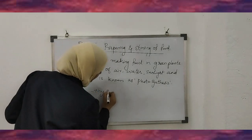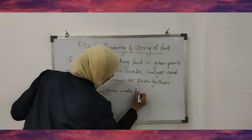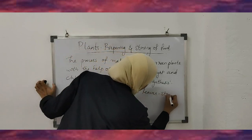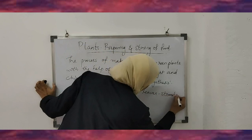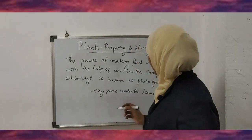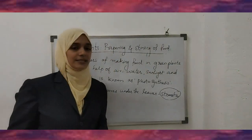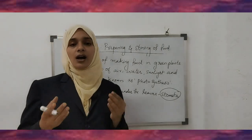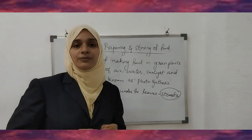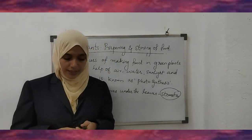These tiny pores under the leaves are called stomata. With the help of stomata, carbon dioxide from the atmosphere enters the leaves and oxygen is released from the leaves. The oxygen given out by the plants is inhaled by human beings.